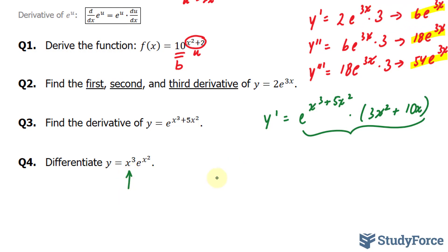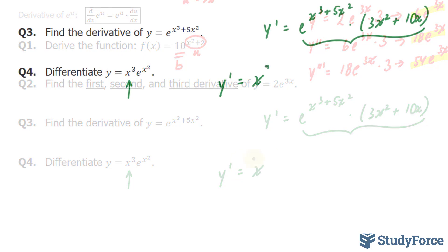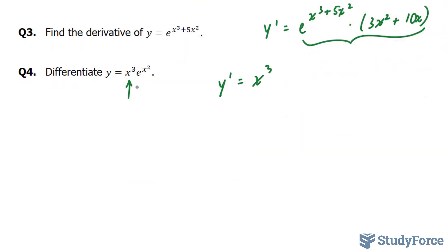We'll start by leaving this the way it is and taking the derivative of e^(x^2), which is e^(x^2) times 2x. I use the power rule to get me 2x. Next I'll find the derivative of x^3 which is 3x^2 and leave that the way it is.